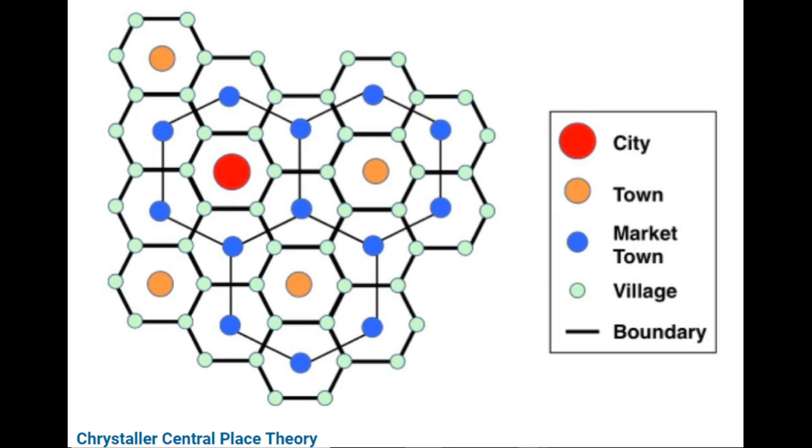The transportation principle involves the minimization of the length of the road connecting central places at all hierarchy levels. In this system of nesting, the lower-order centers are all located along the road linking the higher-order centers. The alignment of the places along a road leads to minimization of road length. For each higher-order center, there are four centers of immediate lower order.